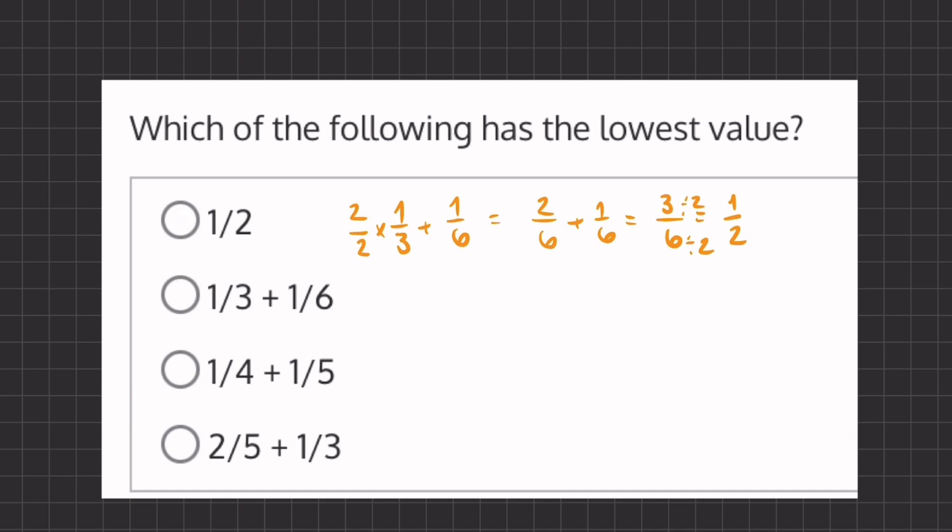This means that the first answer and the second answer are equal to one another, so they cannot be the lowest ones because there has to be one lowest value.